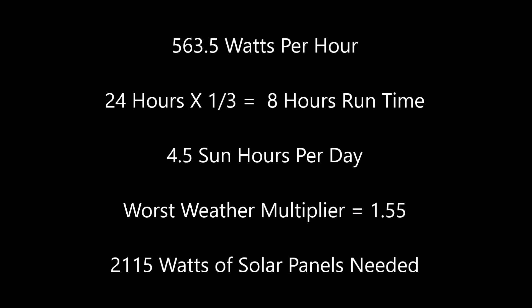There is a multiplier we need to apply to account for clouds passing over the solar panels. This is a worst-case scenario — chances are if you've got bright sunshine every day this won't be necessary — but we have to make sure the system is going to run no matter what. So we're going to use a 1.55 multiplier in our calculations.